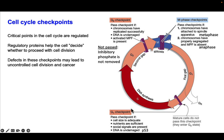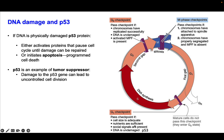Let's look more closely at the G1 checkpoint, specifically the parts that monitor DNA damage and social signals. If the DNA is physically damaged, the P53 protein activates a pathway that will either pause the cell cycle until the damage can be repaired, or initiate apoptosis — programmed cell death — so the cell is removed from the body. P53 is an example of a tumor suppressor, which prevents cell division from occurring unchecked. Damage to or mutation of P53 can lead to uncontrolled cell division.